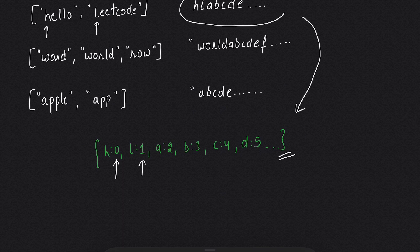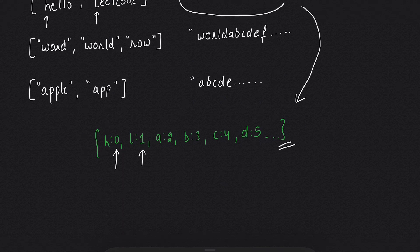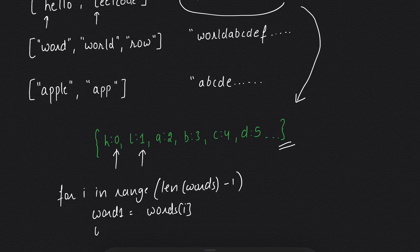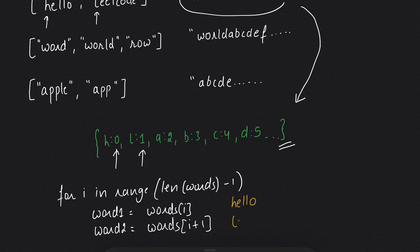Now we will take a for loop in the range of length of words minus 1: `for i in range(len(words) - 1)`. Word1 will be words at index i and word2 will be words at index i plus 1. So word1 will be 'hello' and word2 will be 'leadcode'.